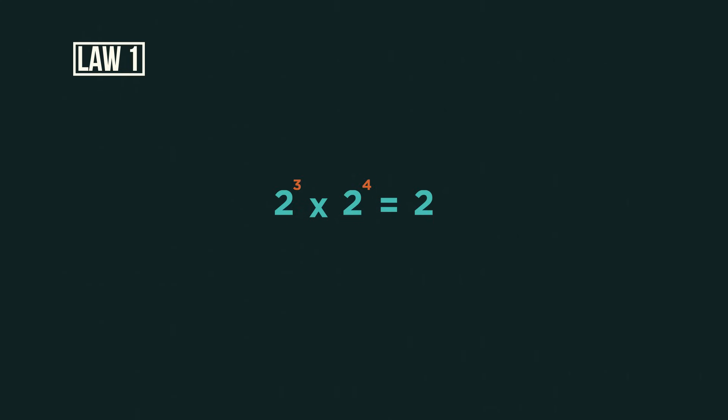So three plus four is seven. Because really it is two, three times, multiplied by two, four times. Giving us seven twos. And three plus two plus one is six.